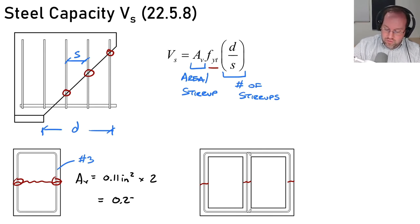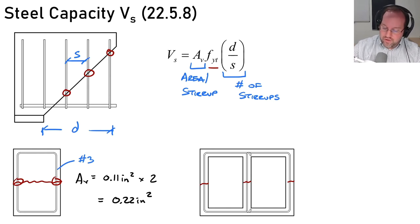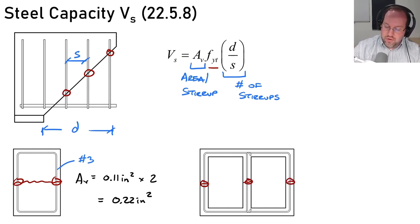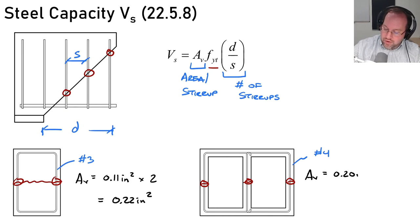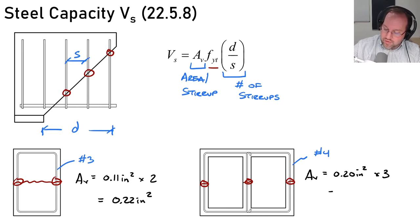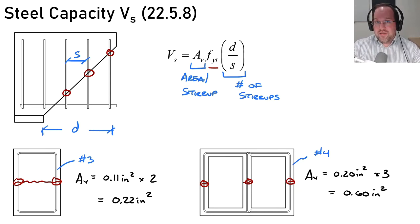In another box section with three stirrup legs crossing the crack — say a number-4 bar — A_V equals 0.20 in² (area of a number-4 bar) times three legs, giving 0.60 in². That covers the basics of shear capacity in ACI 318-19.